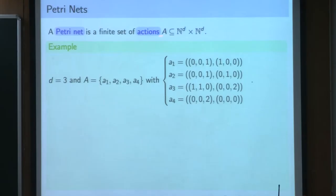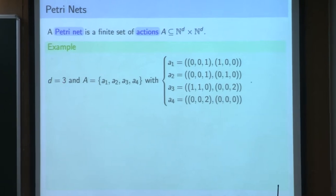So a Petri Net is a model of concurrency. Mathematically it's a very simple model. It's given as a finite set of what we call actions, which are pairs of vectors of natural numbers. Usually it's not just given this way - there is a graphical representation of a Petri Net. I'll provide you an example of such a representation.